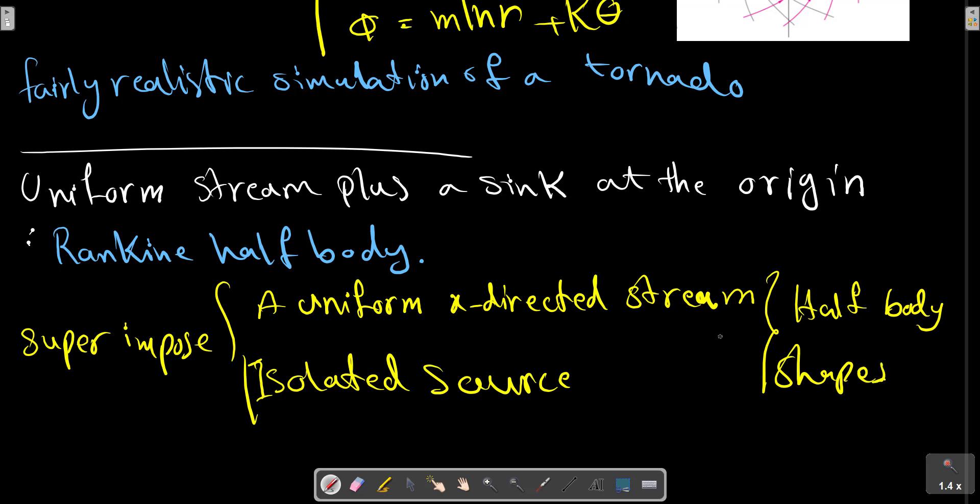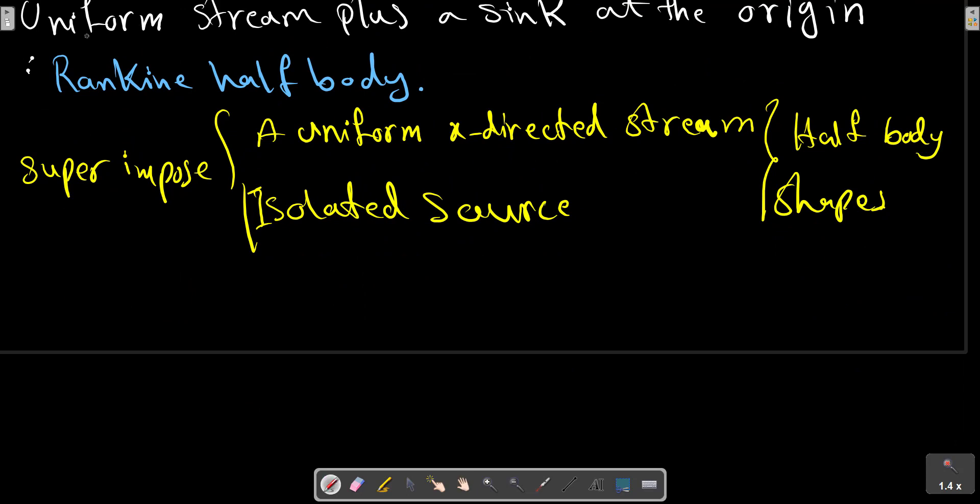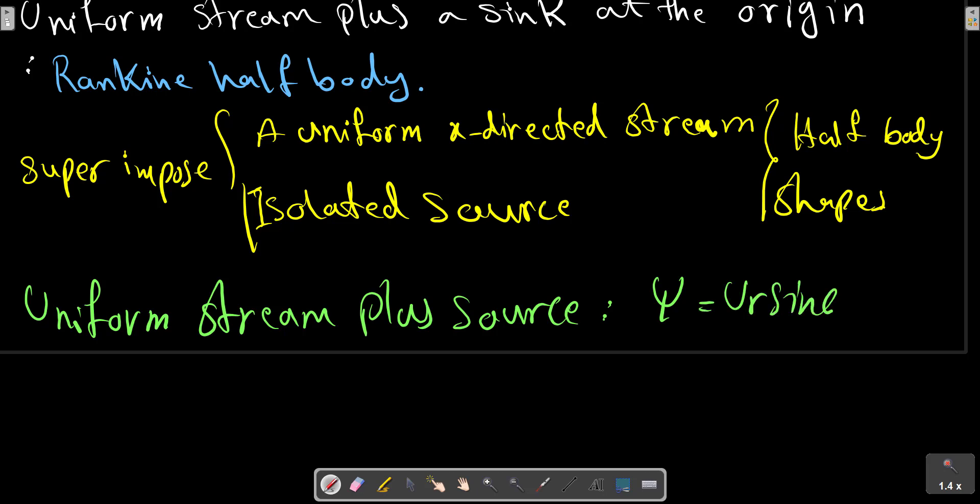If the source is at the origin, the combined stream function in polar coordinates is uniform stream plus source: ψ equals u r m theta.